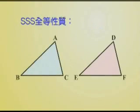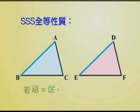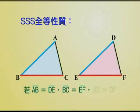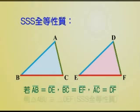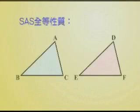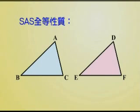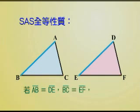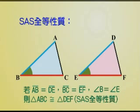S代表的是边Side，A代表的是角Angle。三角形ABC与三角形DEF的三个边对应相等：线段AB等于线段DE，线段BC等于线段EF，线段AC等于线段DF，这两个三角形就会全等，我们称为SSS全等性质。在三角形ABC和三角形DEF中，线段AB等于线段DE，线段BC等于线段EF，角B等于角E，这两个三角形就会全等，我们称为SAS全等性质。